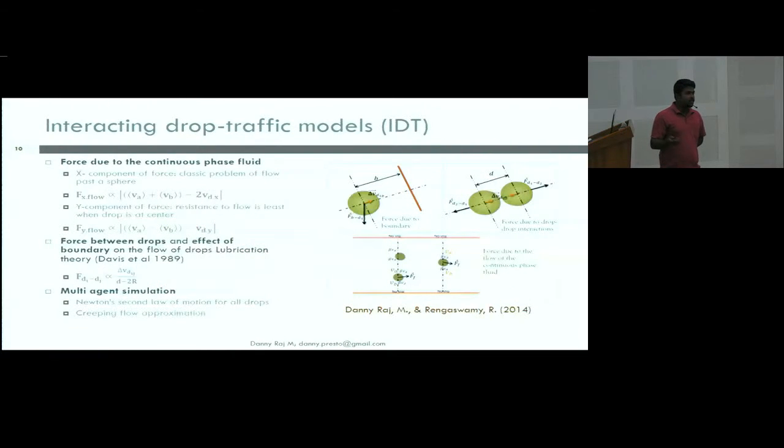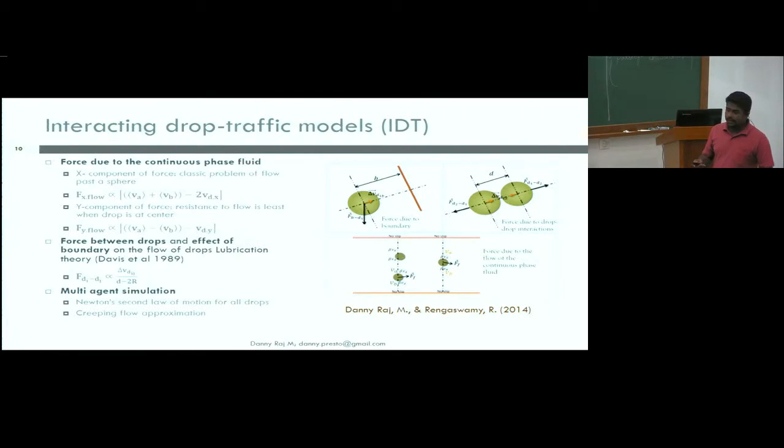For the case where drops are self-organizing, we identify that there are three principal interactions. One is the interaction of the continuous phase, which is basically the drag. Then, when drops move very close to each other, because of the drainage flow between the drops, there will be this lubrication force, which is also present when drops approach a wall. So we identify these interactions. Then we model them using their asymptotic cases, like flow past a sphere or unbounded flow. We use those functional forms. Then we put them into a multi-agent simulation, which basically solves Newton's second law for all the drops together. As I told earlier, the flow regime we are in is very small Reynolds number. So acceleration plays an insignificant role, which will make the equations even more simple.